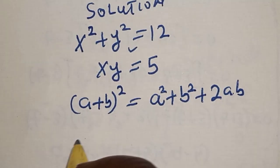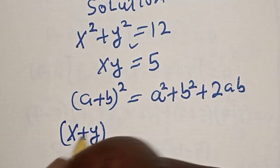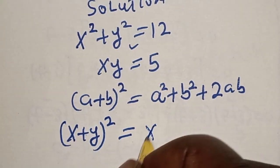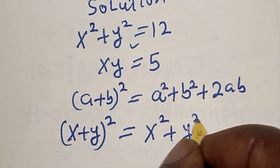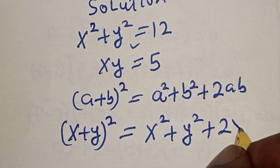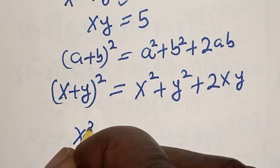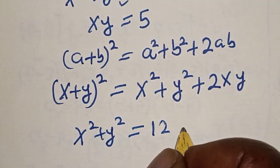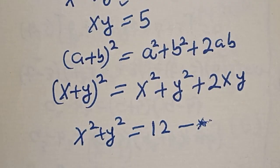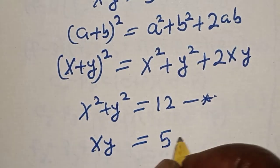Then x plus y squared is equal to x squared plus y squared plus 2xy. Then we know that x squared plus y squared is equal to 12, then xy is equal to 5.